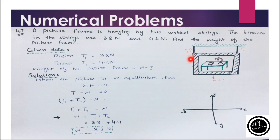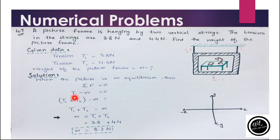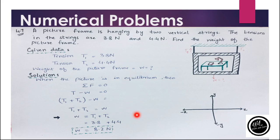The tensions in the strings act in the positive y-axis, so they are positive, while the weight acts in the negative y-axis, represented as minus W, all equal to zero. The resultant tension is T1 plus T2. Moving the weight to the other side gives T1 plus T2 equals W. Putting in the values of T1 and T2, the weight of the picture frame is 8.2 Newton.